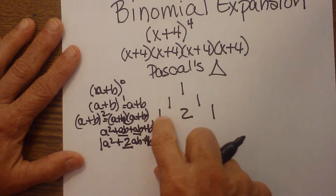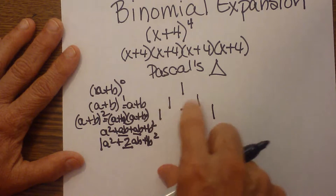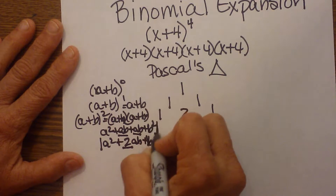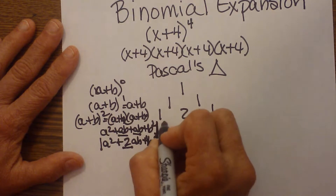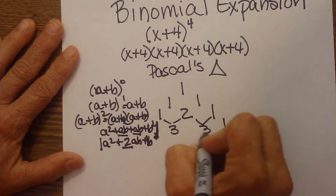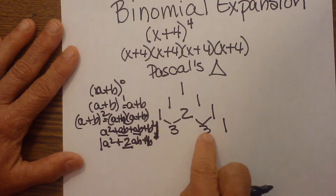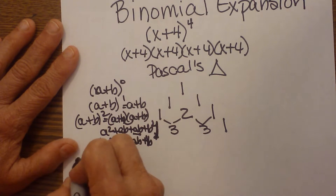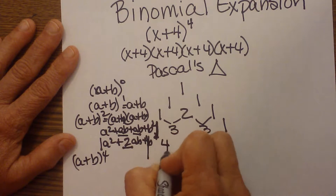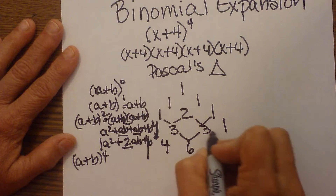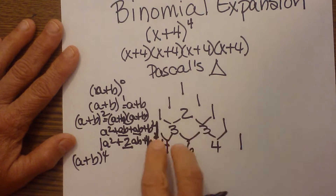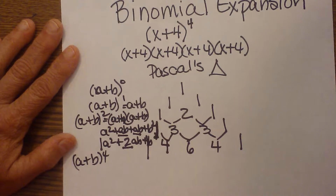Each layer of Pascal's triangle is generated by adding the two coefficients from the layer before. Adding the previous layer's coefficients, if I cube a binomial, my lead coefficients are 1, 3, 3, 1. If I raise it to the fourth power — a plus b to the fourth — my lead coefficients are 1, 4, 6, 4, and 1. Each layer is built by adding adjacent coefficients from the triangle above.